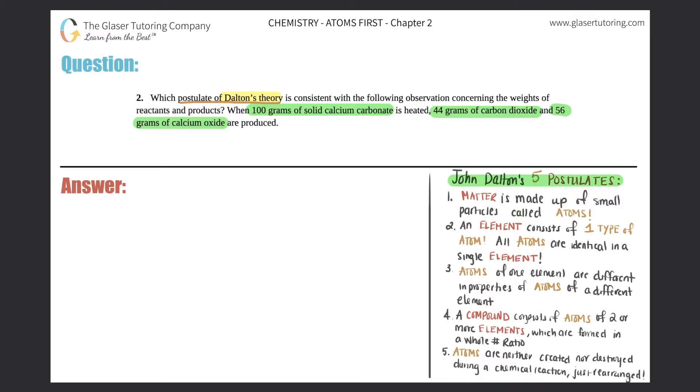Now we want to know which postulate is consistent, which basically means which one is correct, which one are they alluding to in this question? So they're talking about reactants and products. So I know right off the bat that reactants and products are part of a chemical reaction.